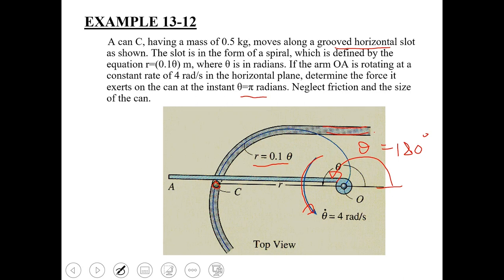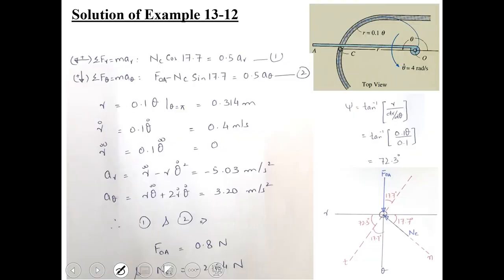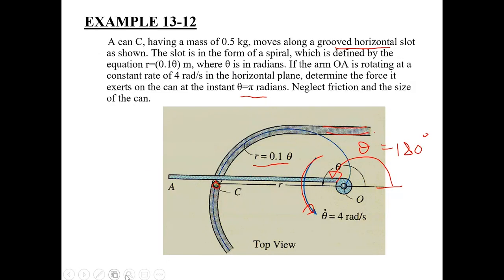At this instant, θ is given as π radians. Neglect friction and the size of the can, which means we are going to treat this can as a particle.